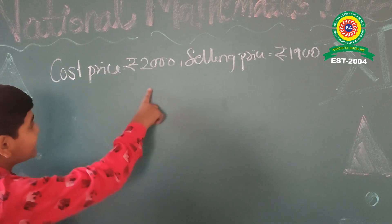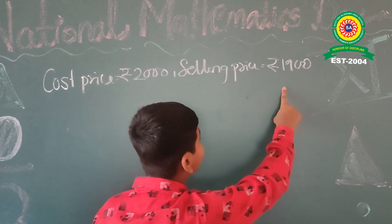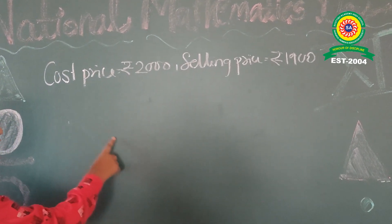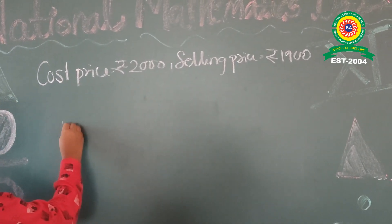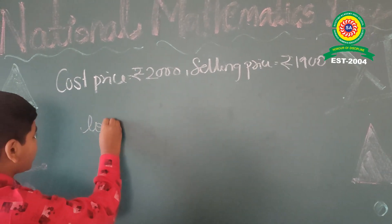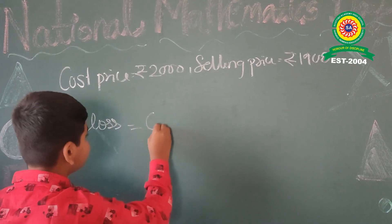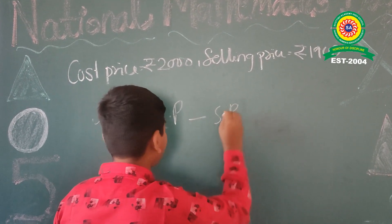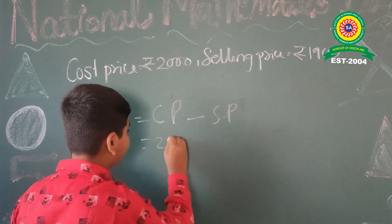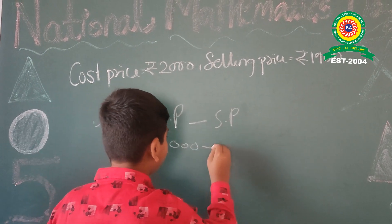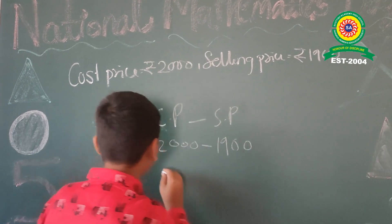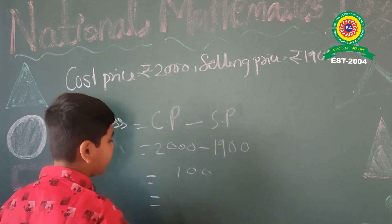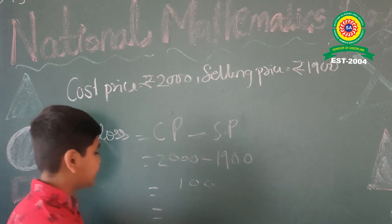Cost price is Rs. 2000. Selling price is Rs. 1900. The cost price is greater than the selling price. There is a loss. Loss equals C.P. minus S.P., which is Rs. 2000 minus Rs. 1900, which is equal to Rs. 100. Then we find the loss percent.